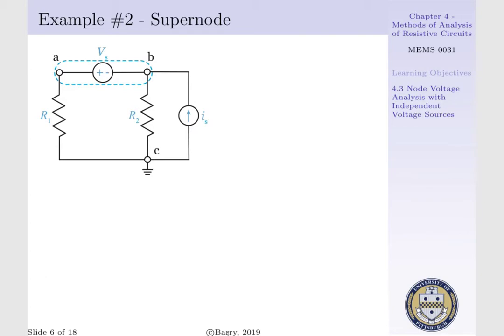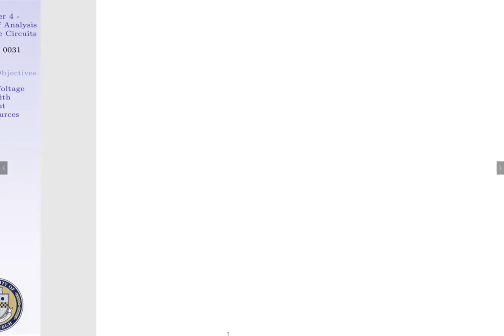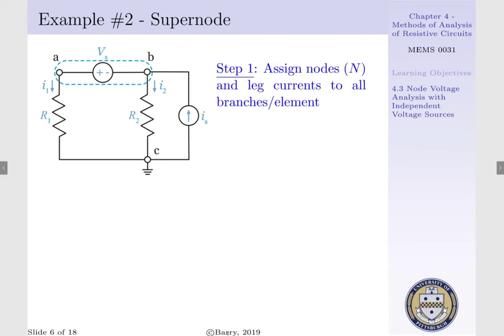To determine our node voltage at B, we will follow our standard four-step procedure. Step 1 is to assign our nodes, which have already been given as A, B, and C, where C's are ground, and leg currents. I1 runs through R1, and I2 runs through R2.